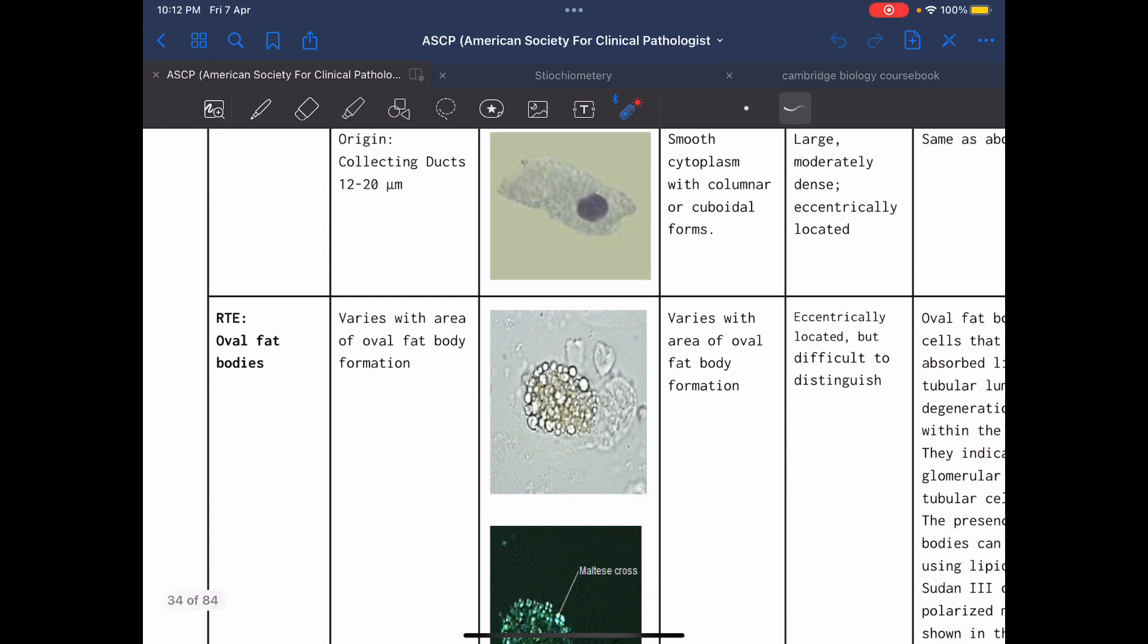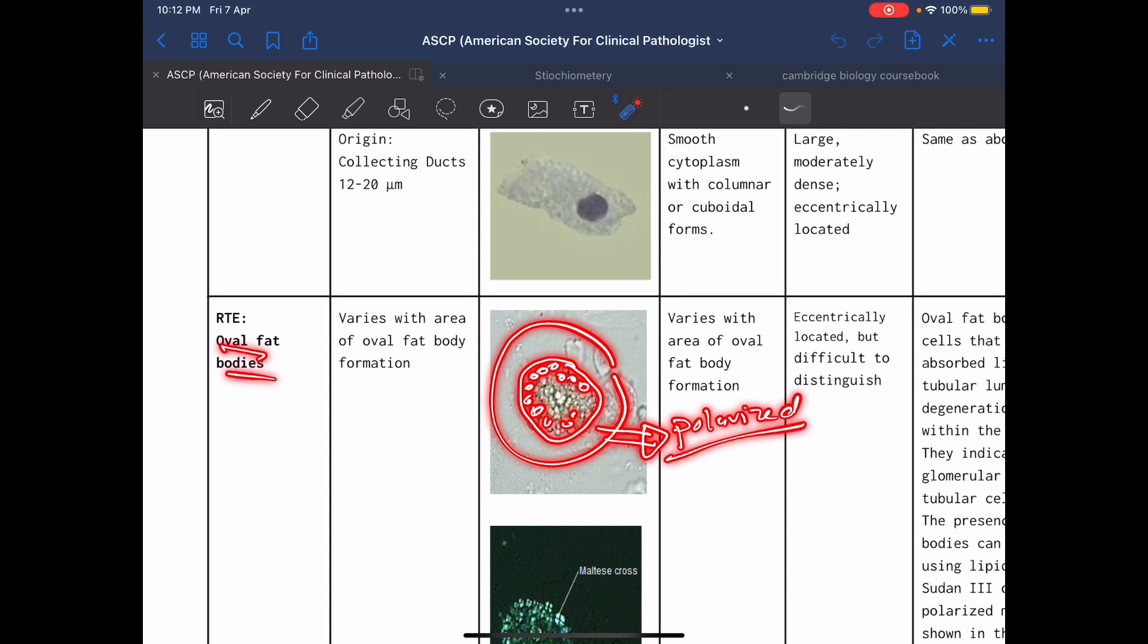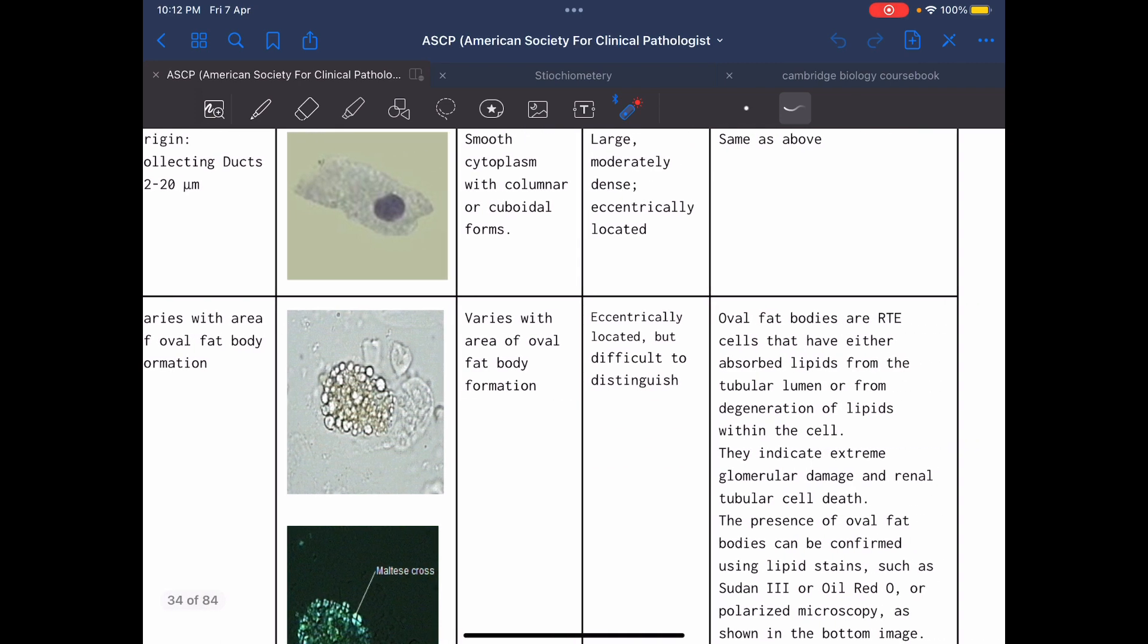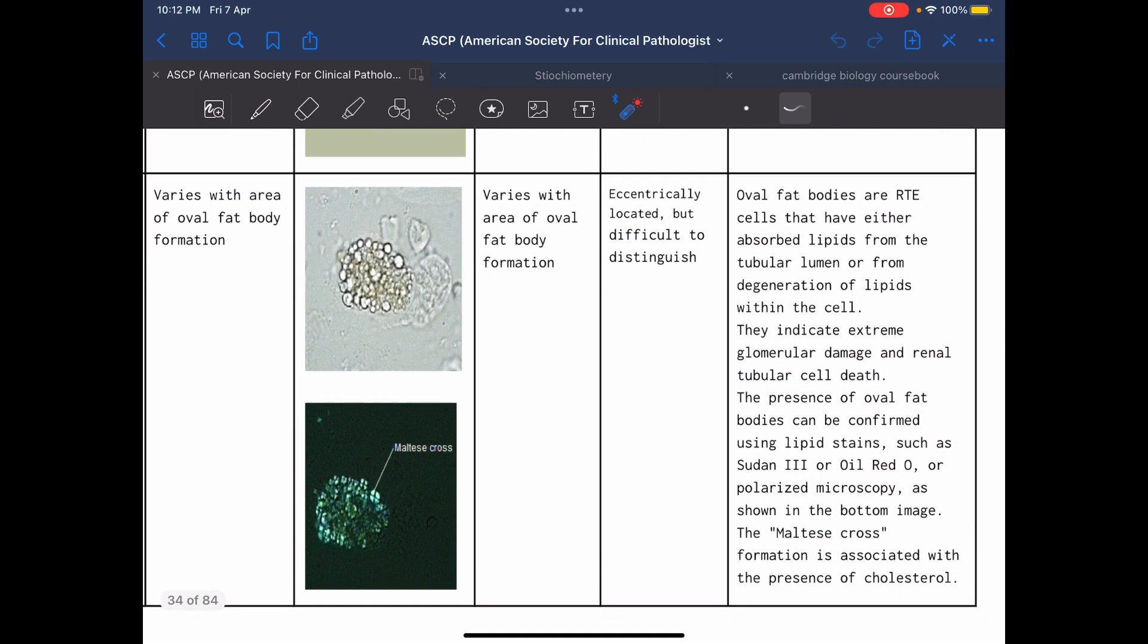When the renal tubular epithelial cells absorb fat from urinary filtrate, it is converted to oval fat bodies. This one can be confirmed by polarized microscope and lipid stain.